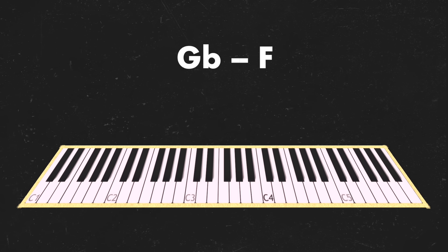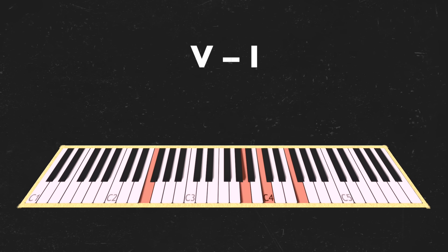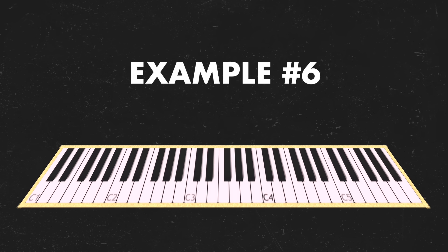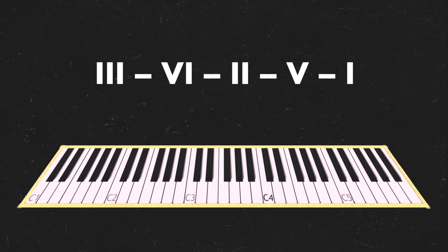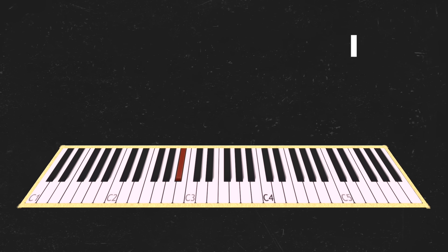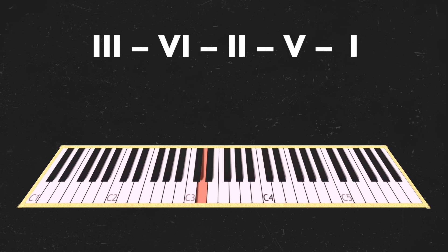This basic cadence of 5 going to 1 can be applied in so many different situations. I'm going to show you one more: I'm going to extend that 2-5-1 backwards into a 3-6-2-5-1. When I say backwards, what I mean is I'm basically working my way back in fourths or fifths, however you want to think about it. So if we're going to B flat — that's our arrival point — instead of just 2-5-1 to get there, I'm going to do 3-6-2-5-1.